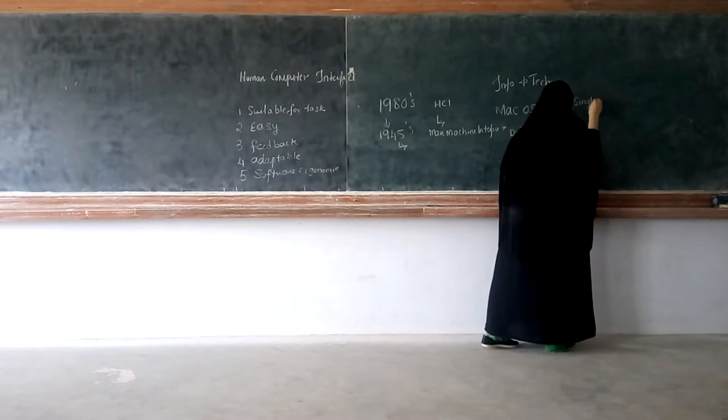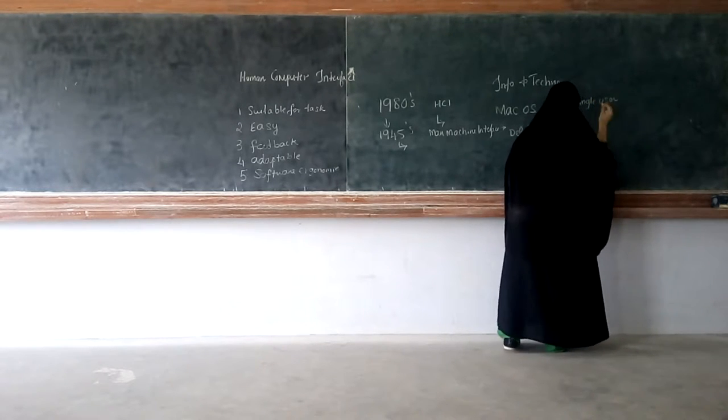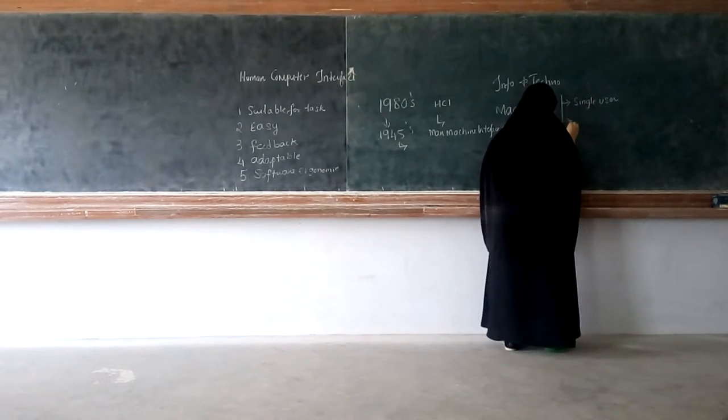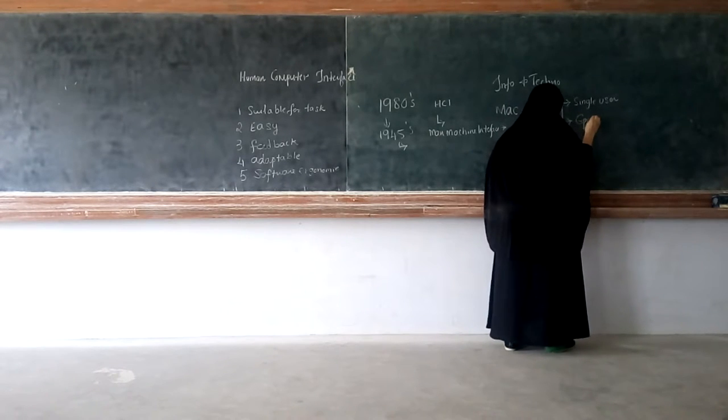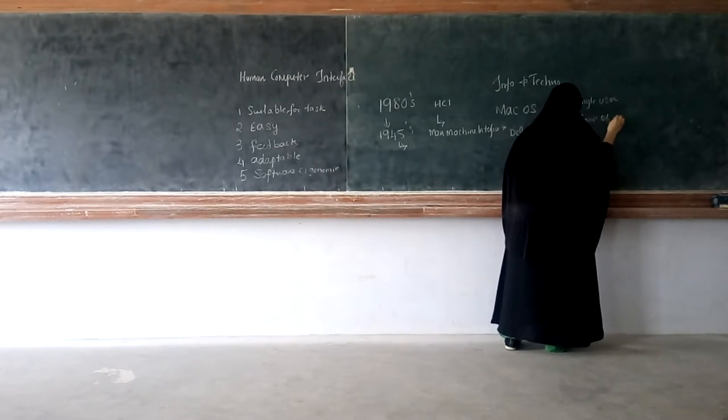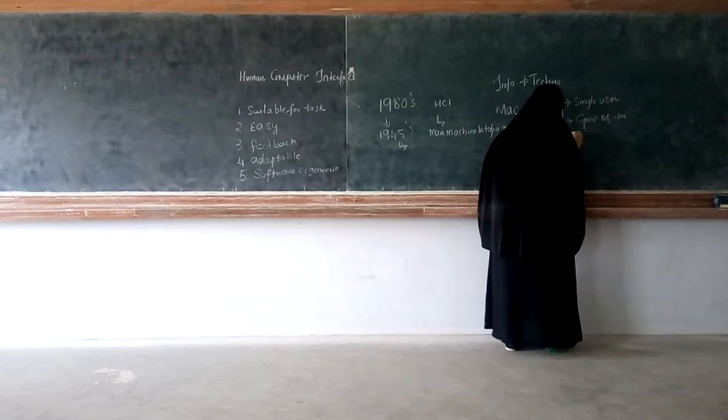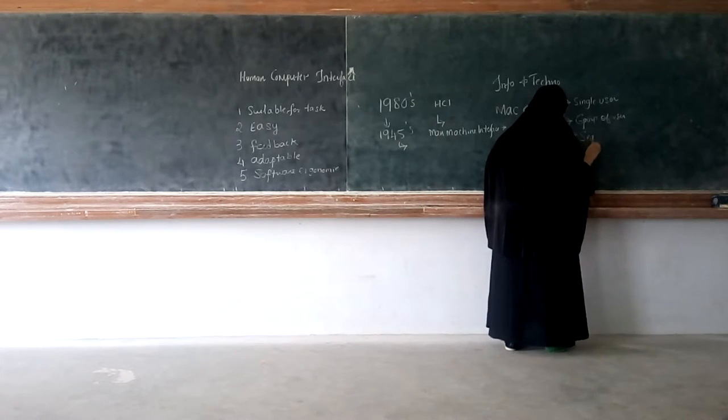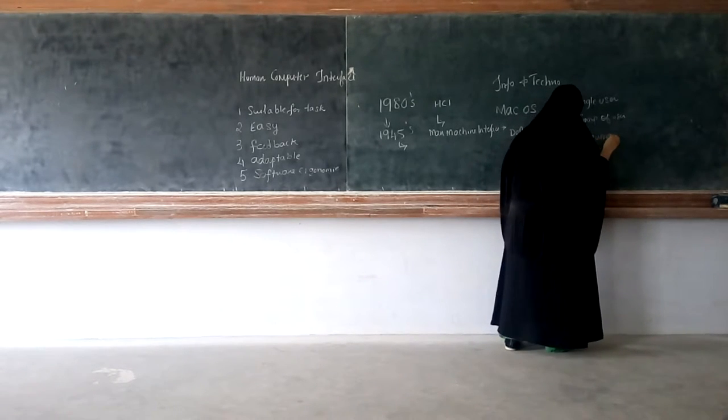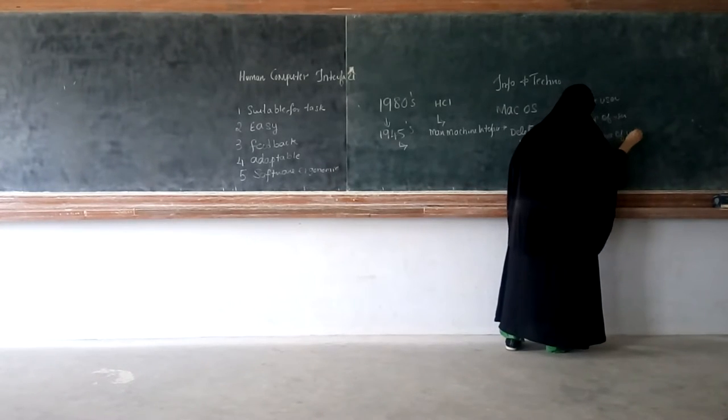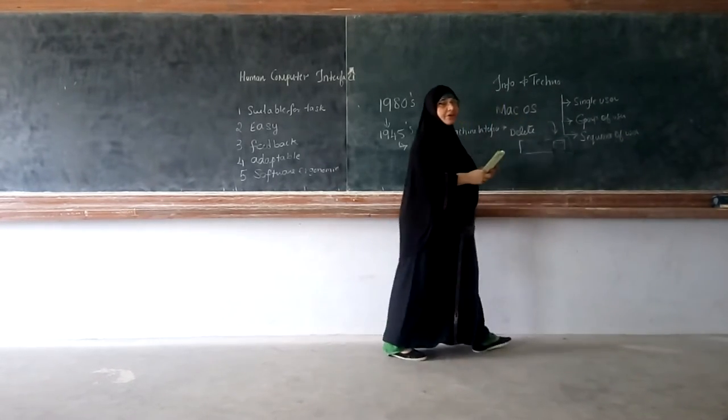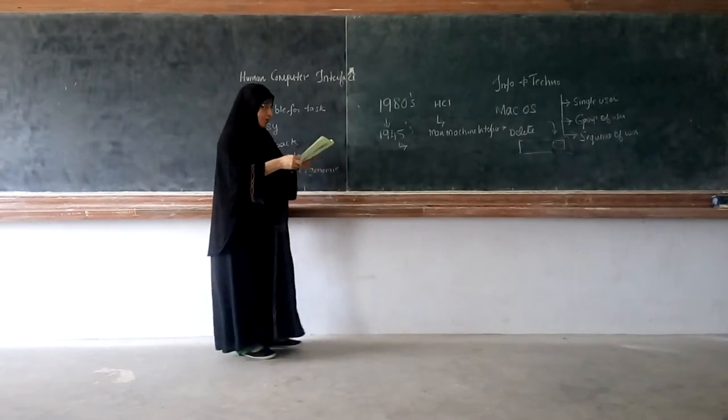So what do you mean by a single user? A system can be designed for a single user, it can be designed for a group of users, or it can be for a sequence of users. That is, somebody leaves a job and goes for the next work, that can be continued with a mixed set of users.